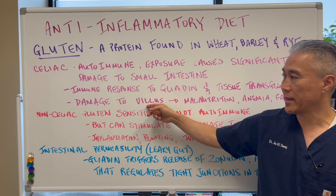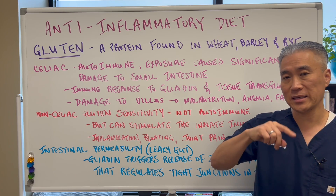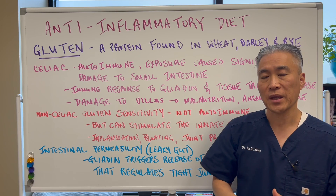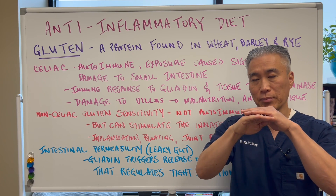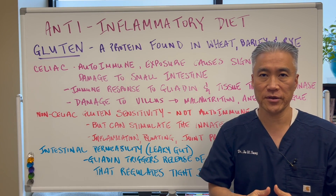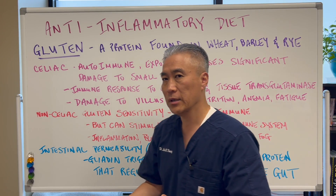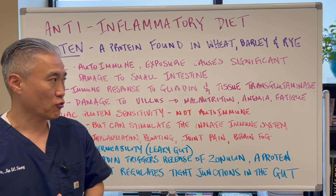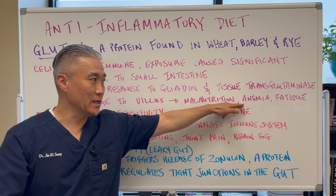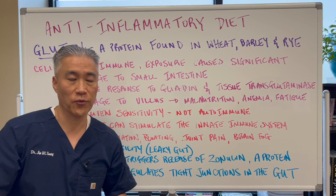What it does is damage the villi of the small intestine. The villi are basically the folds of the small intestine, and gluten blunts them — it shortens them and decreases the surface area, leading to malnutrition, malabsorption, and chronic issues. So it can lead to anemia, fatigue, digestive issues, and so forth.